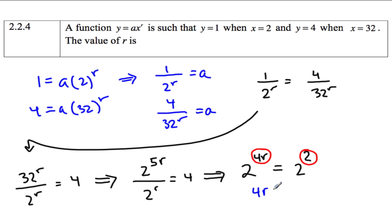And to finish it, 4r equals 2. So then r equals a half. And it's done. And if you wanted to find a, you could plug that back in here or here and find out what a is.